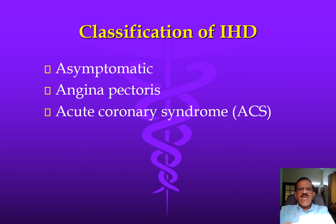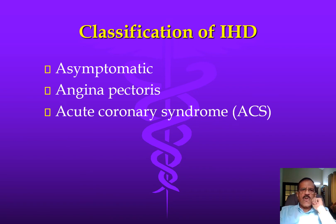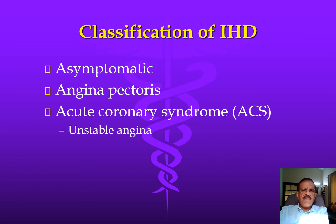Then we have acute coronary syndrome. Any angina which has worsened could be called acute coronary syndrome, or somebody having ischemic pain which started at rest could be called acute coronary syndrome, or somebody who developed frank myocardial infarction — that could also be called acute coronary syndrome. So unstable angina and myocardial infarction are both included in acute coronary syndrome.